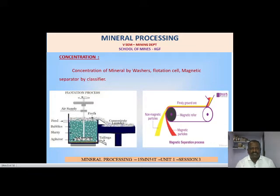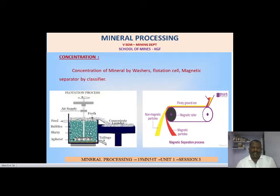In the flotation tank, the mixture is blended using air bubbles supplied through an agitator at the bottom. This causes heavier particles to sink and lighter particles to rise to the top, allowing us to remove the gangue materials effectively.